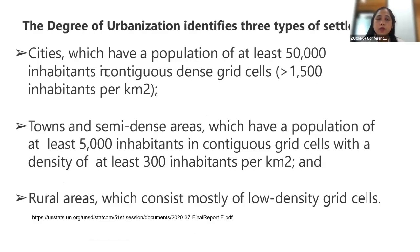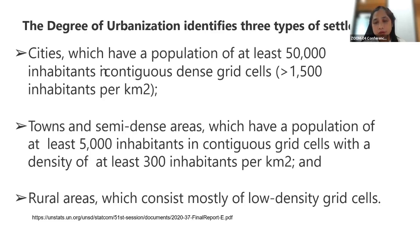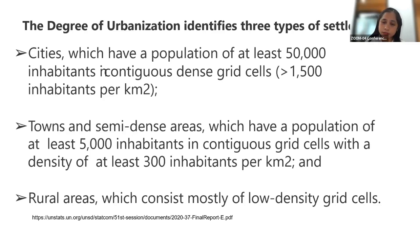The degree of urbanization depends on the number of population and refers to three types of settlement. First, cities, which we consider when the population has at least 50,000 inhabitants with corresponding density. Second, towns and semi-dense areas, with a population of less than 5,000 inhabitants. Lastly, rural areas, which consist mostly of low density of population. With this, we can determine the area where we'll implement community-based disaster reduction — whether it is high or low density.